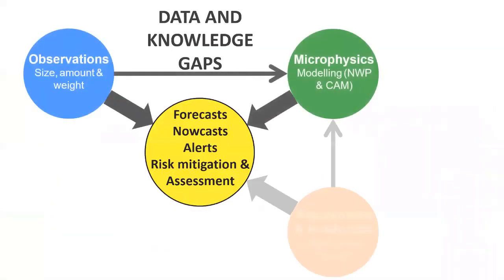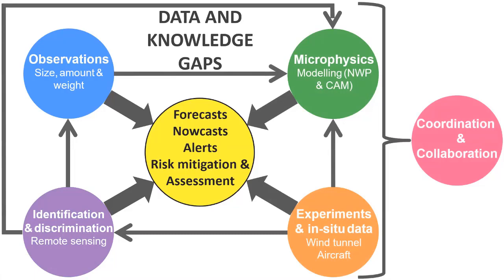I've identified about four major pillars of areas where there are still important gaps in our knowledge, and I've also been thinking about some ways to address those gaps. The four pillars are: observations, microphysics, experiments and in-situ data, and the identification and discrimination of hail. These all feed into improved forecasts, nowcasts, and alerts, as well as risk mitigation and assessment — all falling under the umbrella of coordination and collaboration.